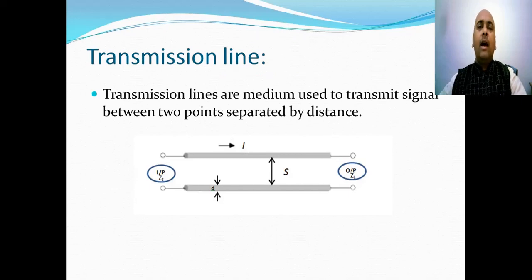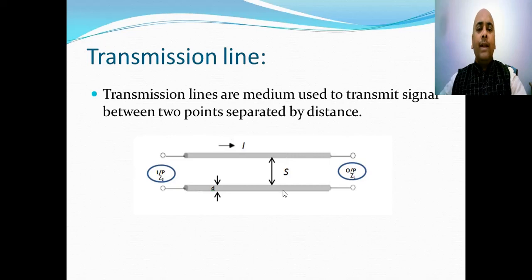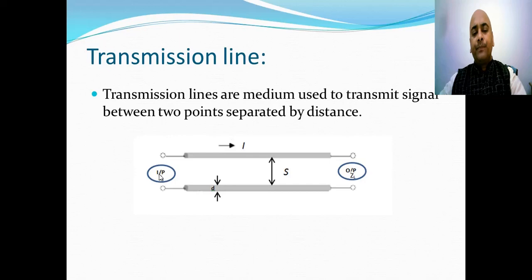Transmission lines are a medium used to transmit signals between two points separated by a distance. A two-wire transmission line is as represented in the slide. It consists of two conducting wires, each conductor having diameter D, separated by distance S. The length of the transmission line is L. It is fed at one end by a voltage source having input impedance Zs, and the output is taken across the other end through load impedance Zl.